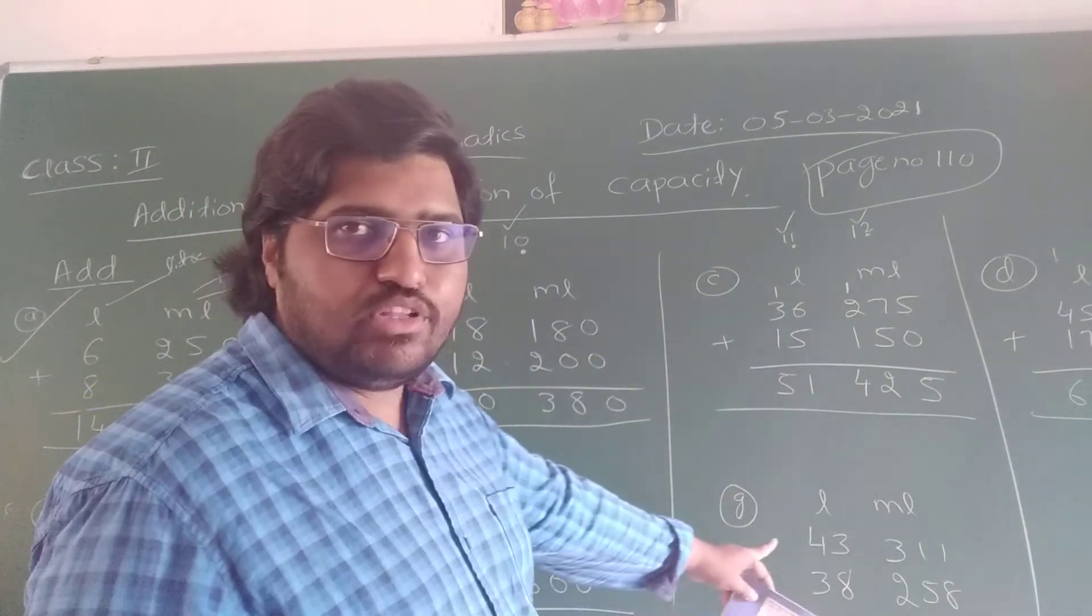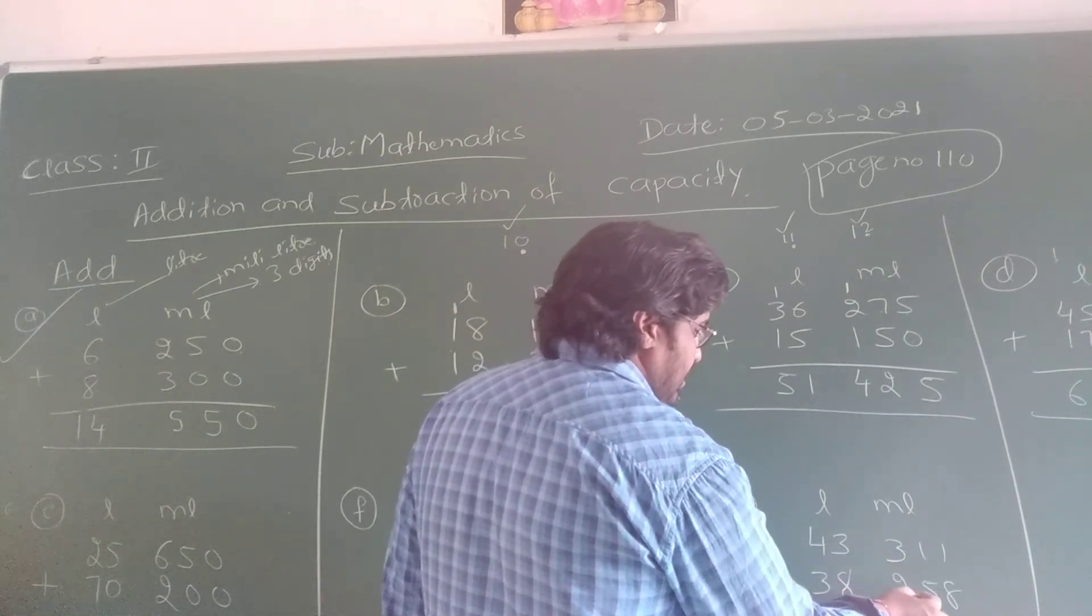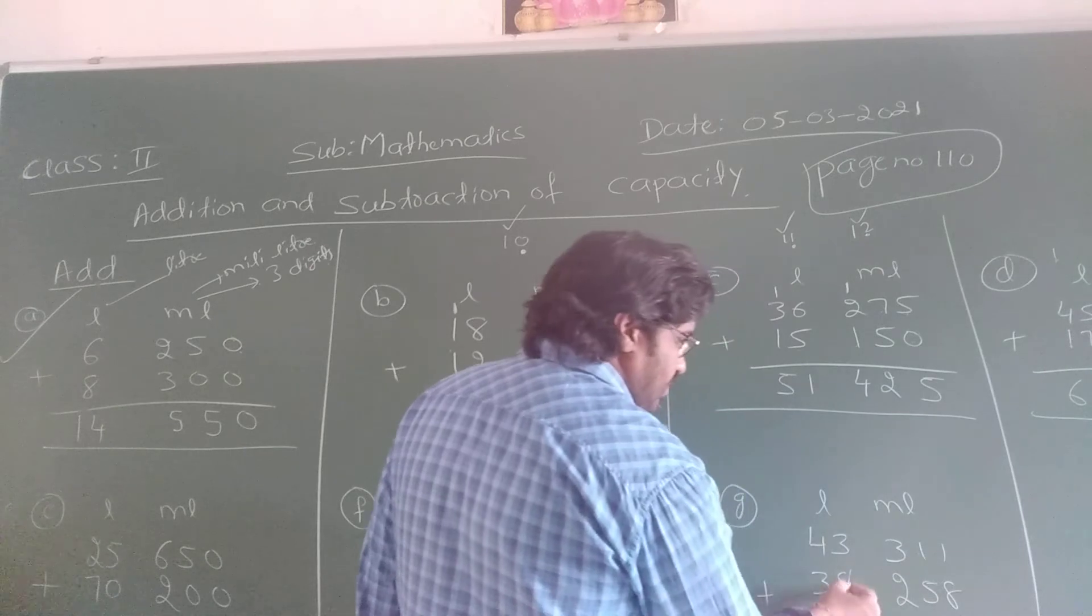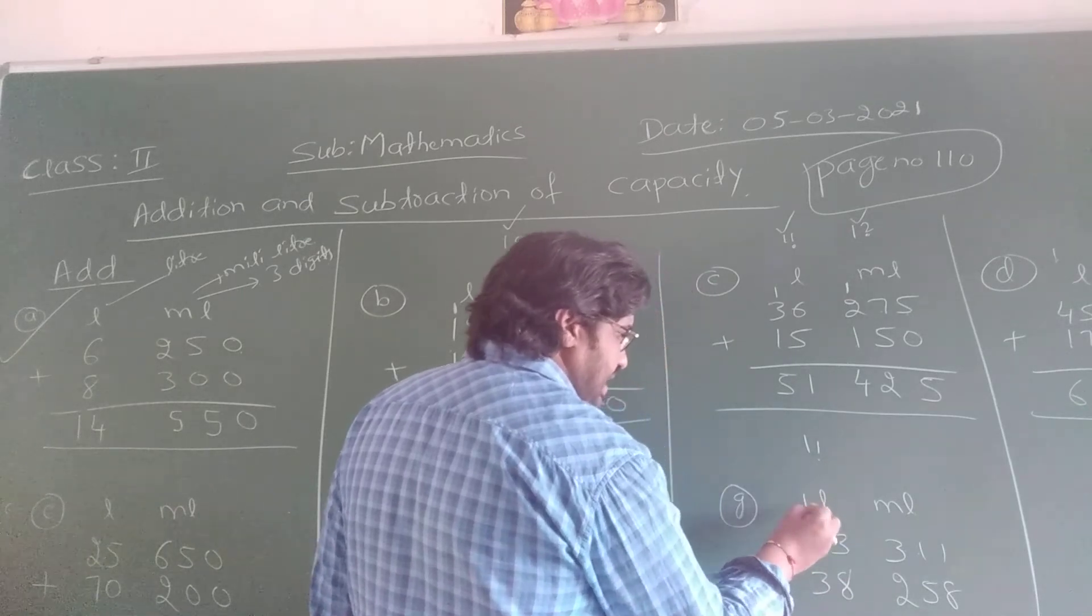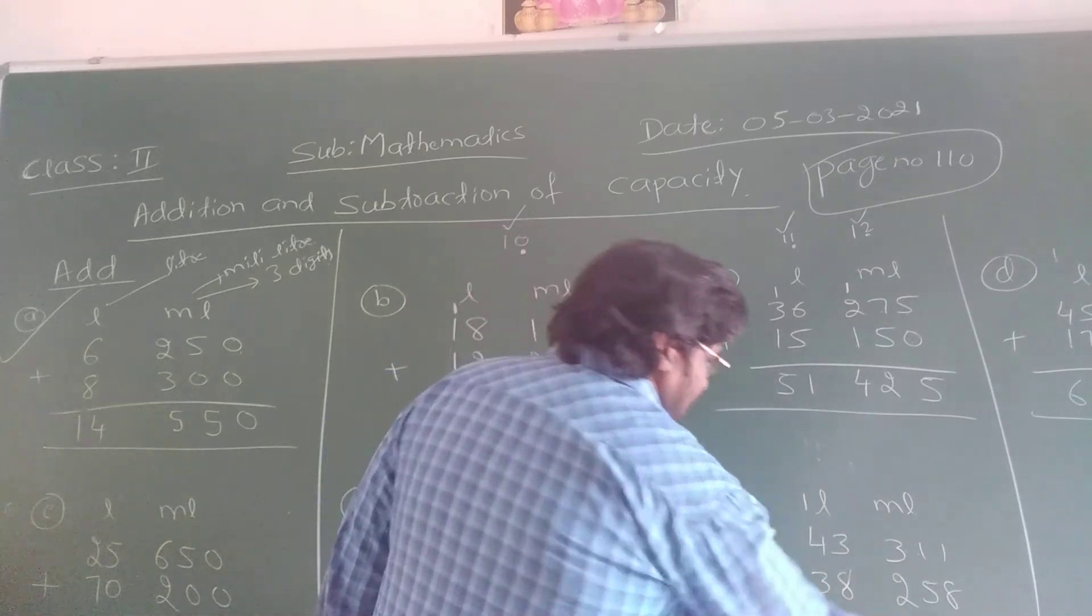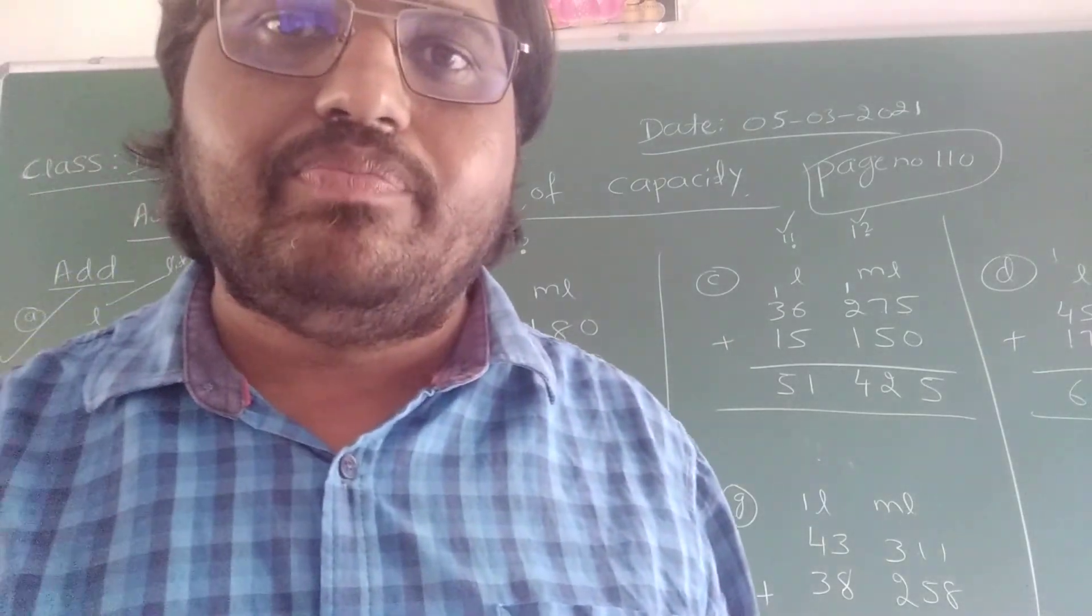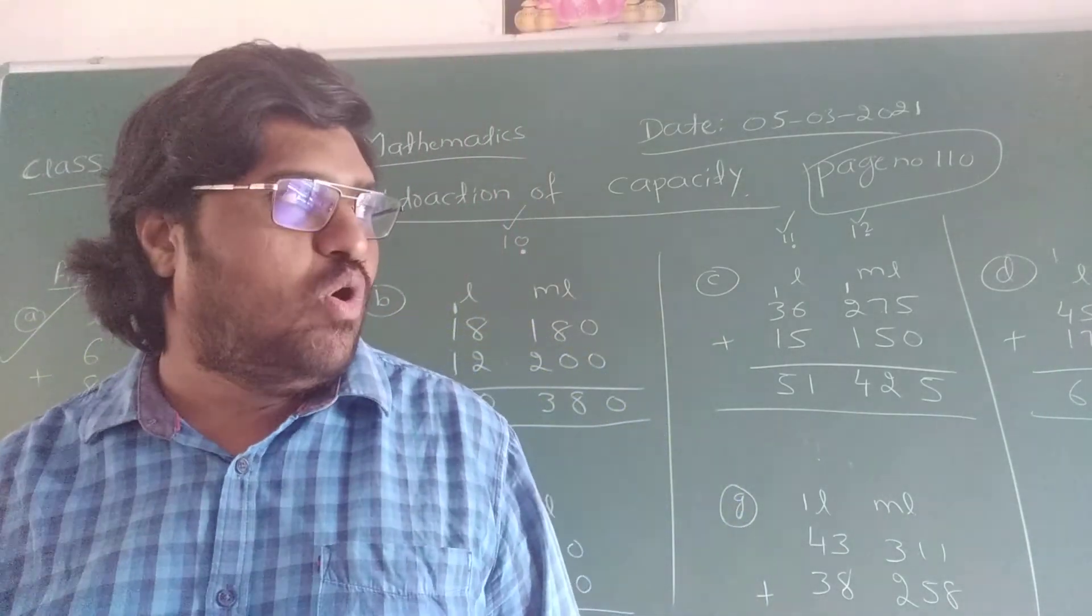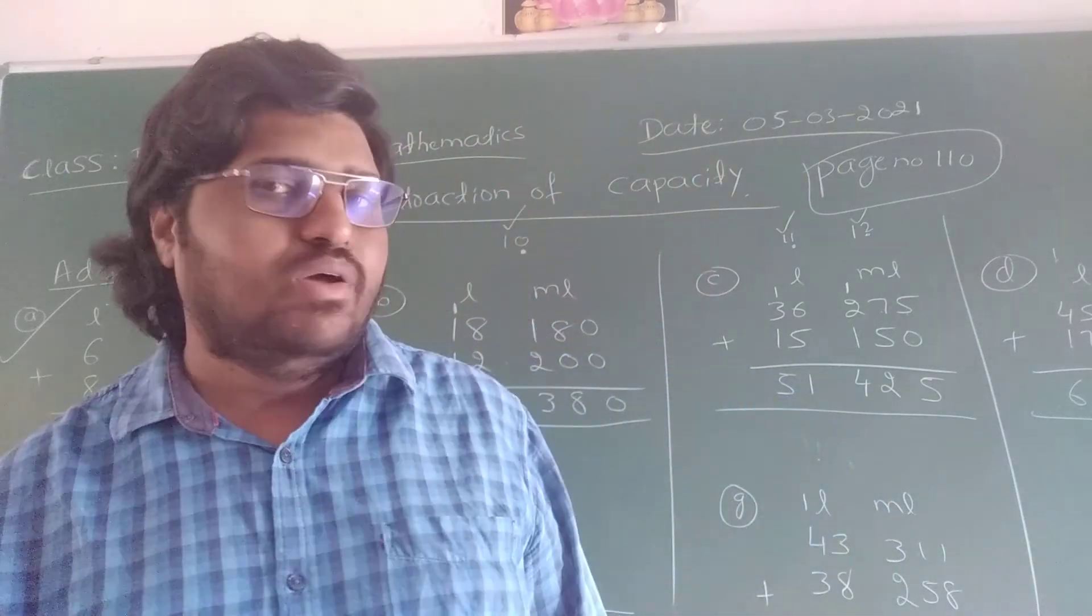Okay now come to the question number G. 43 liter and 307 ml plus 38 liter 258 ml. 8 plus 1 is 9. 5 plus 1 is 6. 3 plus 2 is 5. 8 plus 3 is 11. For 11 you want to take ones digit number and tens digit number as a carry. 4 plus 3 is 7, 7 plus 1 is 8. So the answer is here 81 liter and 569 milliliter. Okay so children you have to write these sums in your classwork and practice this in your homework notebook. In the next video I am going to teach you the subtraction of the capacity. Thank you.